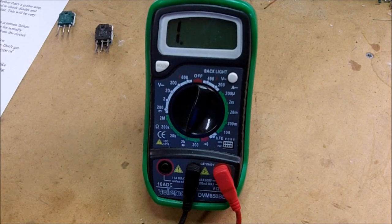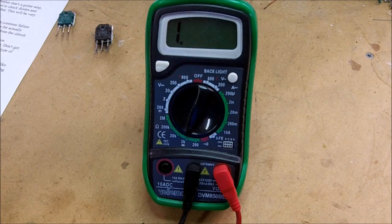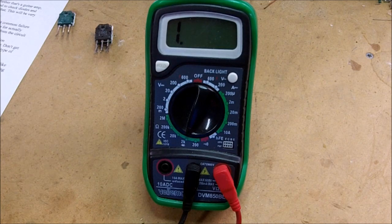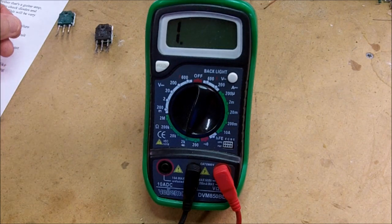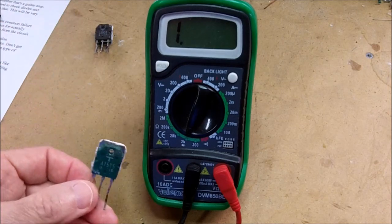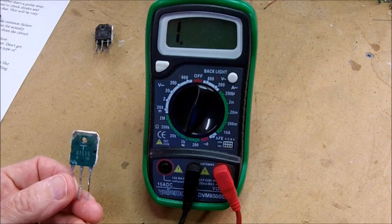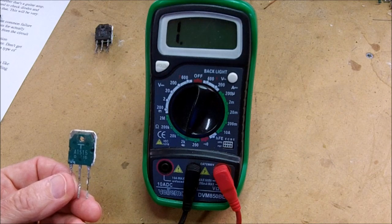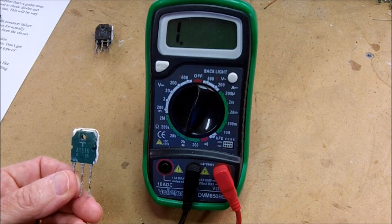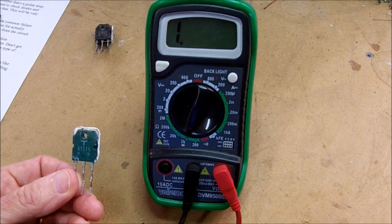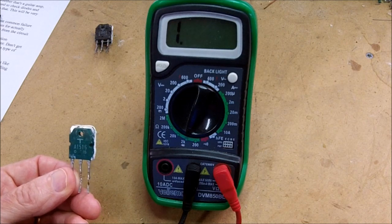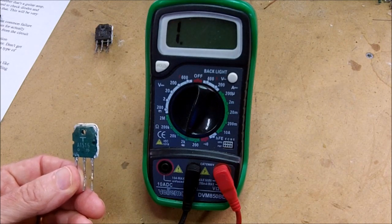Now, a diode is essentially a one-junction device. It has a P side and an N side. It's a PN device. A transistor, on the other hand, they come in two varieties, PNP and NPN. So they have two junctions in them, and we can test each of those junctions and expect to get a front-to-back ratio like we did on the diode.